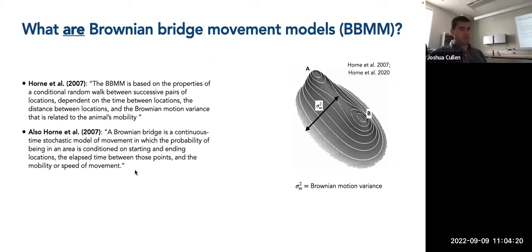A paper by Horne and colleagues offers a slightly different definition: a Brownian Bridge is a continuous time stochastic model of movement in which the probability of being in an area is conditioned on starting and ending locations, the elapsed time between those points, and the mobility or speed of movement. This is a continuous time stochastic model, with Brownian motion or diffusion occurring randomly through time between sets of points conditionally.